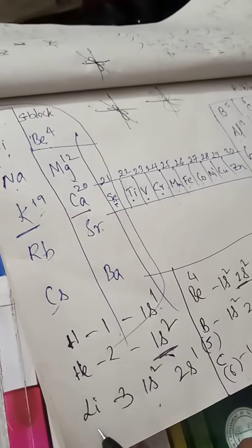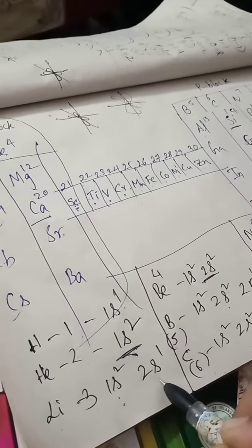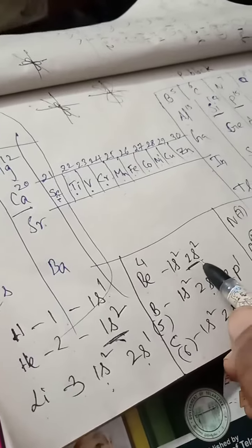Lithium: after 1s² is filled, we go to 2s¹. Beryllium: after 1s², 2s² because the atomic number is 4.